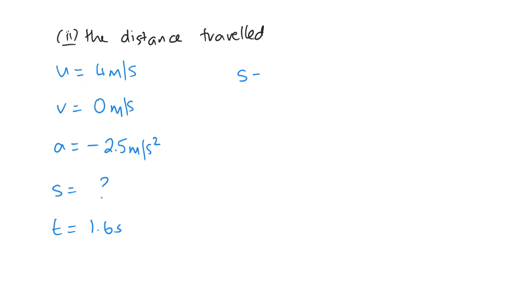I'm going to use this one here. S equals a half upon U plus V times T. So that's a half upon 4 plus zero times 1.6. So 4 plus zero is obviously 4. So multiply those together and we get 3.2 meters.